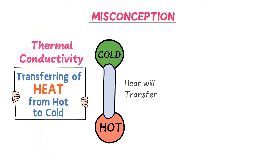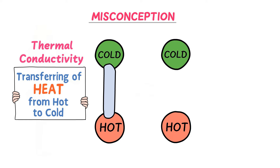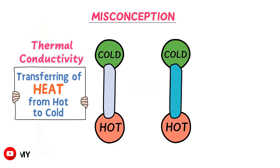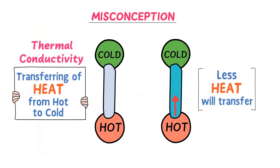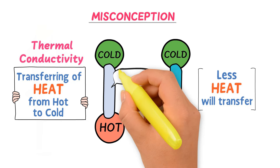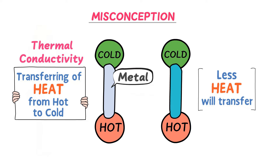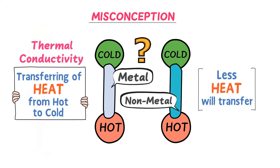Remember that different objects have different thermal conductivity. Consider the same hot and cold objects — this time instead of a metallic rod, I insert a plastic rod between them. We will observe that comparatively less heat will transfer from the hot object towards the cold object. Therefore, metals like this rod have high thermal conductivity, while non-metals like this plastic have low thermal conductivity.